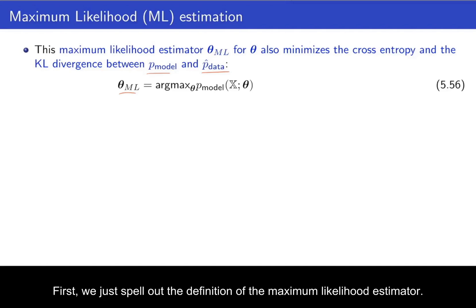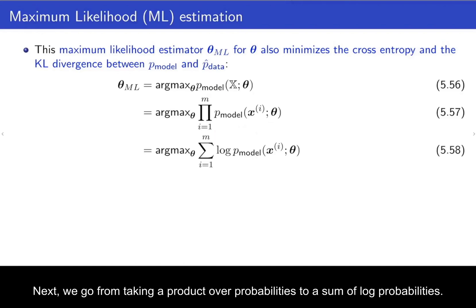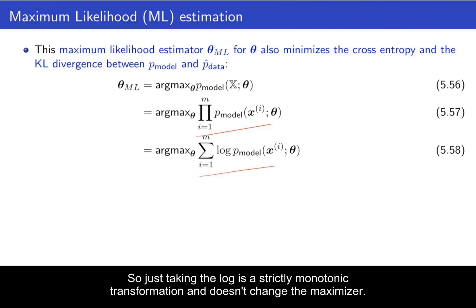So in the equivalence proof between the maximum likelihood estimator and the minimizer of the cross-entropy loss and the KL divergence goes as follows. First, we just spell out the definition of the maximum likelihood estimator. It's a maximizer of the data under the model. Then we realize that this data here is a set of data points. And this is the probability of that. So we just spell this out as the product of all the individual probabilities of the individual data points. Next, we go from taking a product over probabilities to a sum of log probabilities. So just taking the log is a strictly monotonic transformation and doesn't change the maximizer.